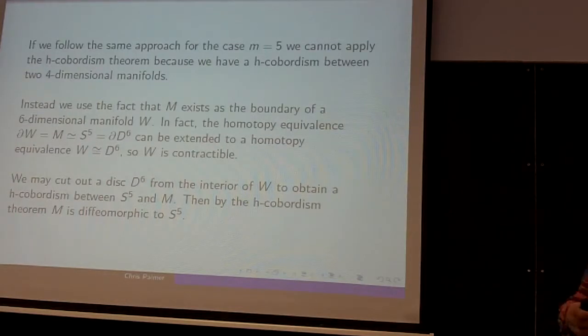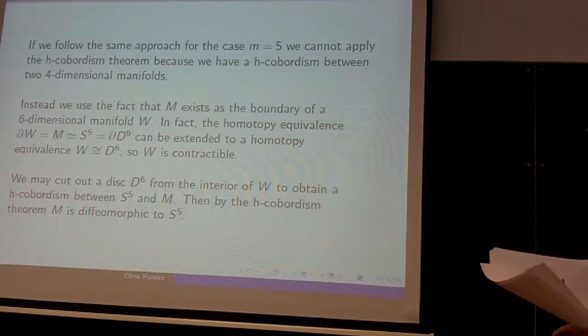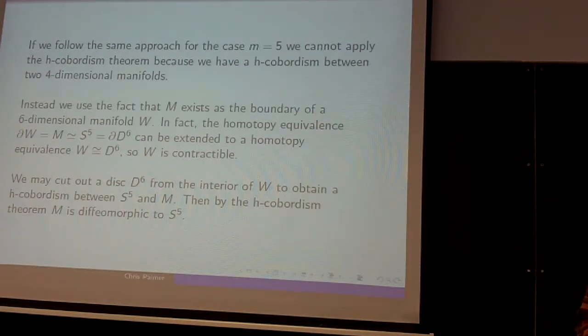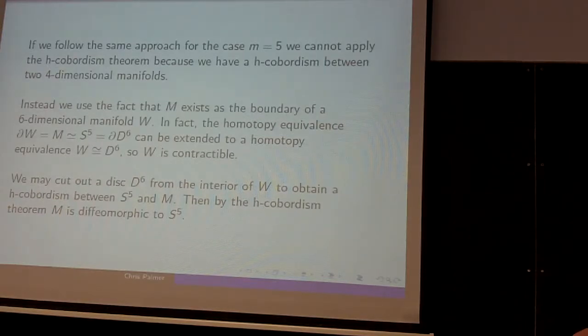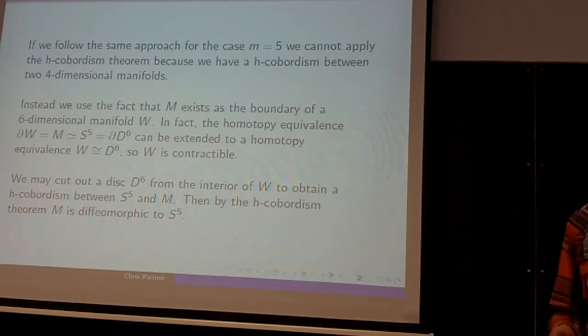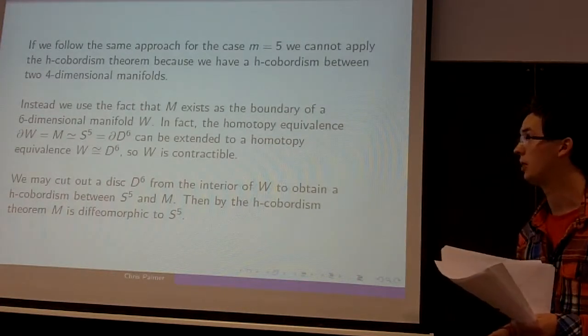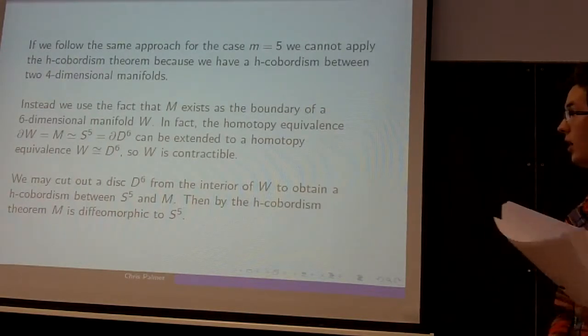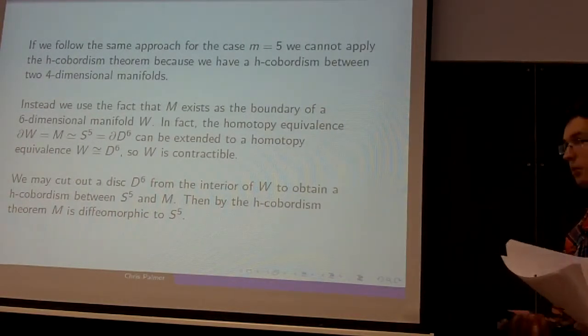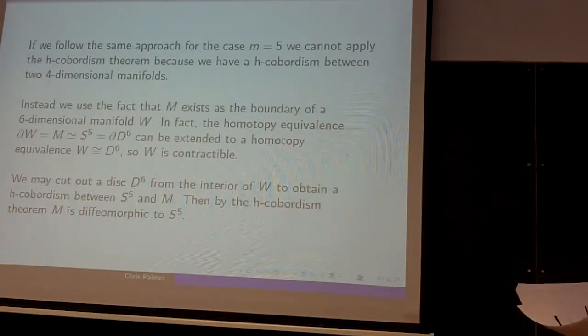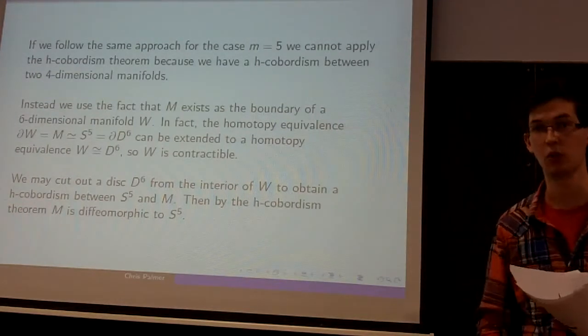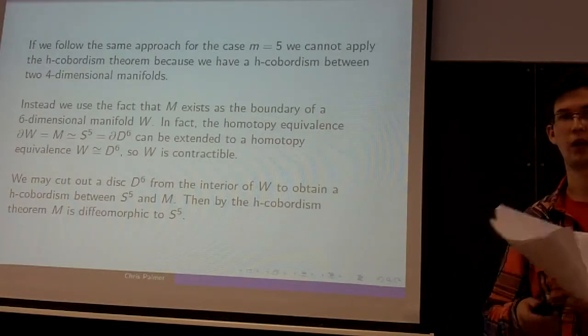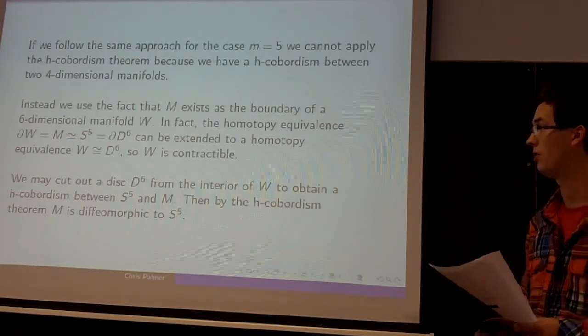If you have a closed five-manifold, then it always exists as a boundary of a six-dimensional manifold, because you could take the Cartesian product with half-closed interval [0, 1]. And you can show that this homotopy equivalence between M, which is now the boundary of W, and S^5, which is the boundary of the six-dimensional disc, can be extended to a homotopy equivalence between W and the six-dimensional disc. So W is contractible and simply connected. In this case, W already has one boundary component, which is M, so we only remove a single six-dimensional disc, which has boundary S^5, and then the hypotheses of the H-cobordism theorem are satisfied.